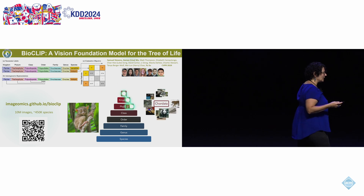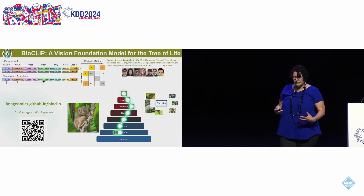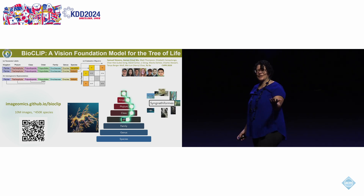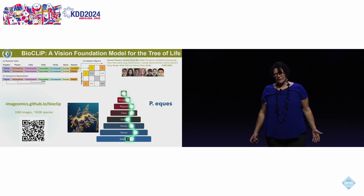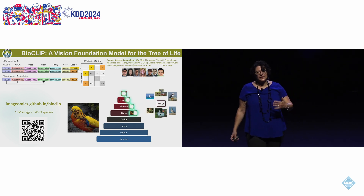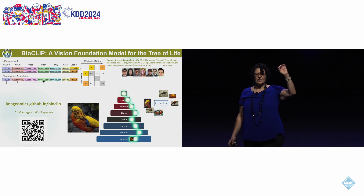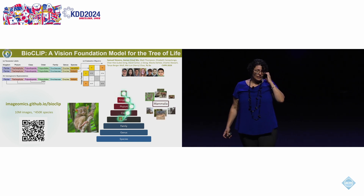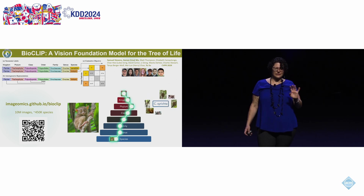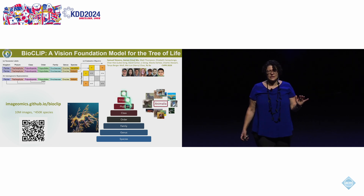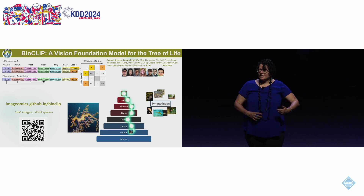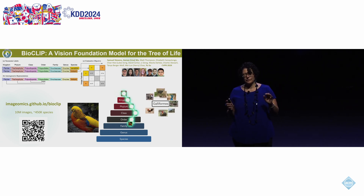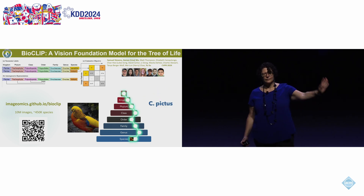We built a foundation model for the tree of life by combining the structure of taxonomy — this structured definition of species in biology — with massive collections of images: 10 million images as a first pass, covering about 450,000 species. Here's a quiz: how many species of animals, plants, and fungi are there? Not counting bacteria. Yell out something — I'm hearing billions, I'm hearing trillions.